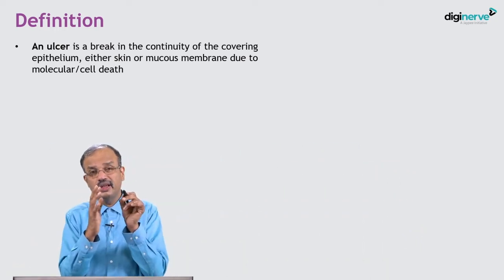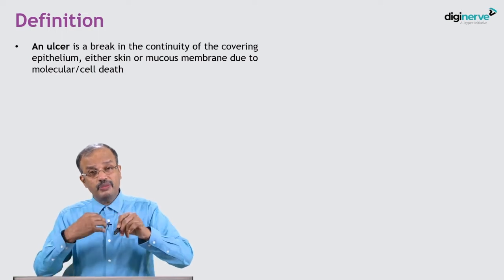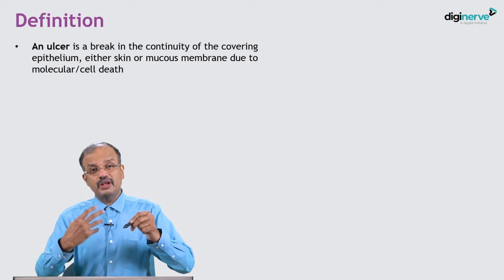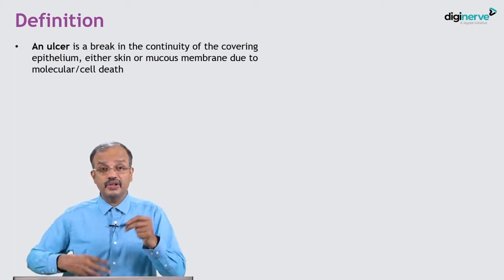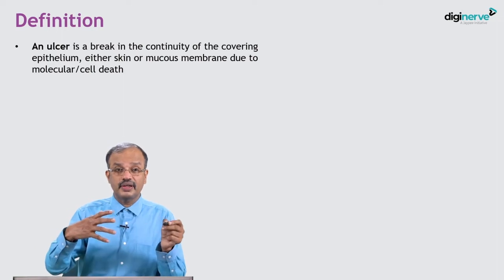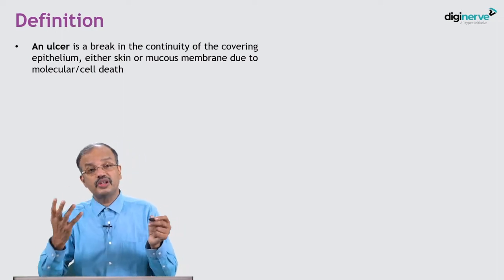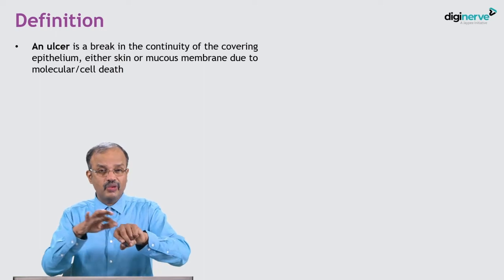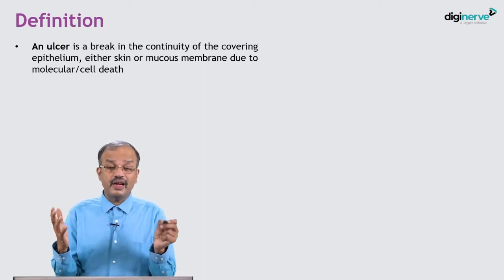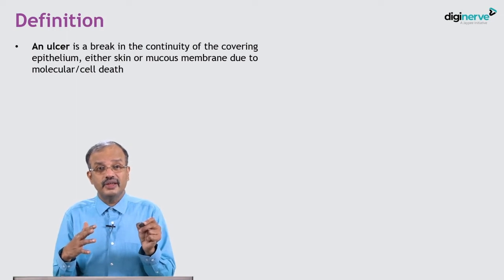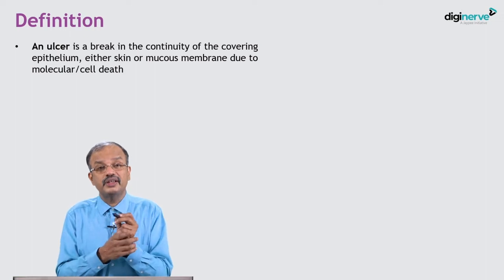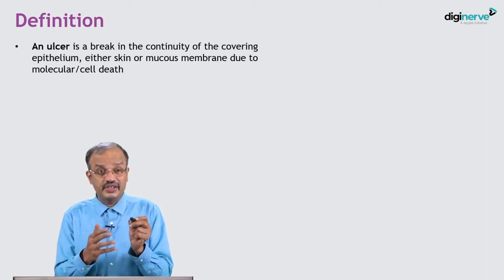It is a break in either the skin or the inner lining of the GI tract. There may be a gastric ulcer, duodenal ulcer, colonic ulcer, esophageal ulcer, or mouth ulcer - same ulcer in the skin. Wherever a lining is lost and a crater forms due to cell death, that is called an ulcer.